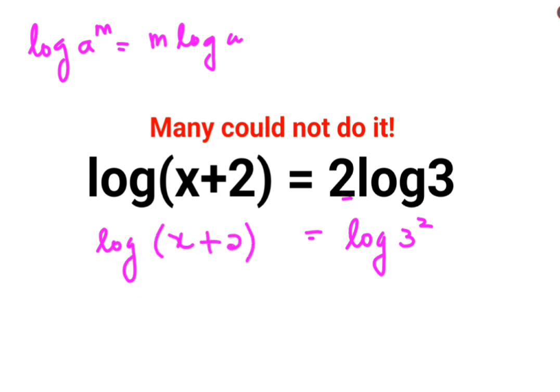Now taking anti-log on both sides, the log will get rid of, now we are just left with x plus 2 equals to 3 square, which is 9.